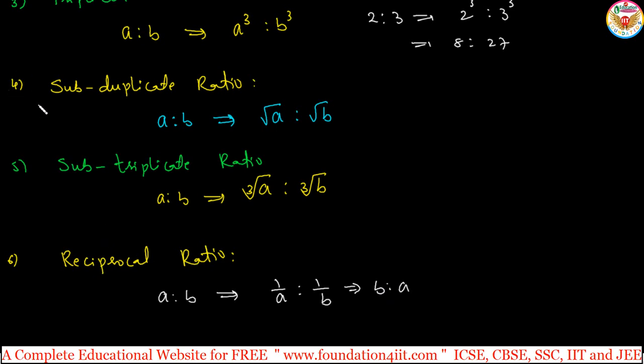These are the main six types we can use in this composition of ratios. Let us see the problems and some word problems, numerical sums based on this all.